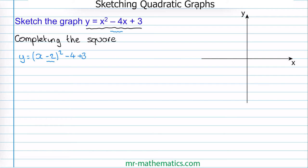If you're not sure how to complete the square, there's a link to a video on this in the description below. So now we can simplify this: y is equal to x minus 2 squared, and negative 4 plus 3 is negative 1. So now we have it in completed the square form.